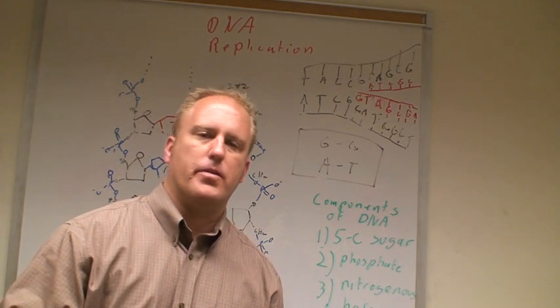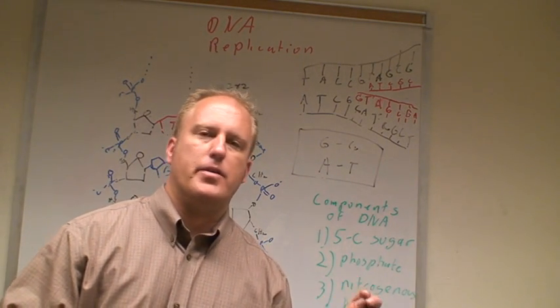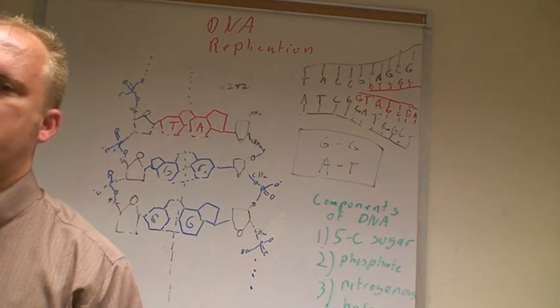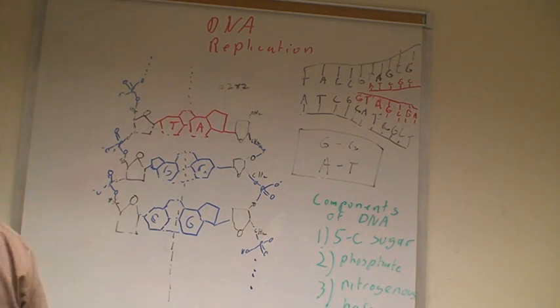Remember that we started out as a single cell organism, so that means with one copy of your genome. So that means that genome has been copied trillions of times, one for each cell. How does that happen?